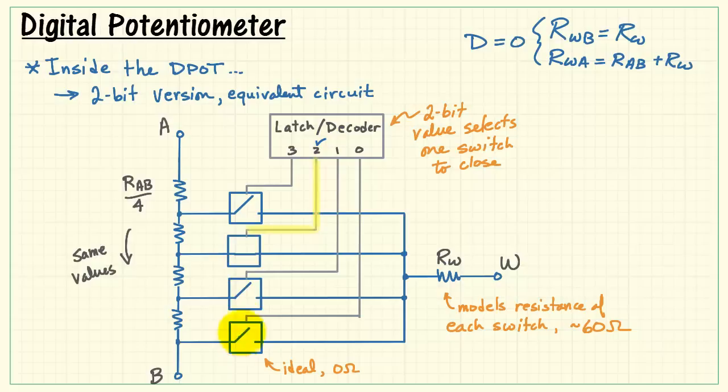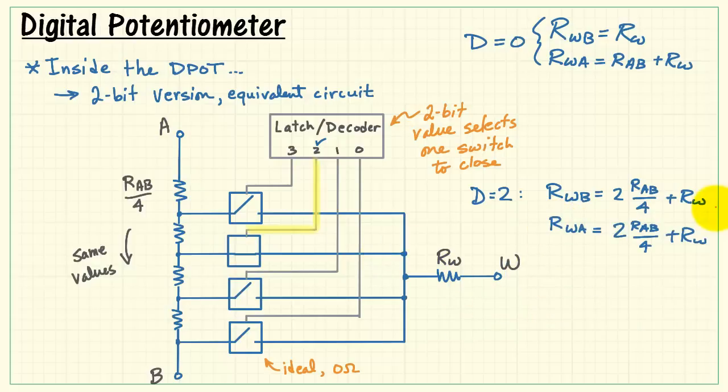Now suppose the digital value was two. That would close this switch and open the one down here. Now B goes through two resistors on its way out to W. That would look like two times RAB divided by four. Going from A to W, we actually get the same result. Two of those one quarter RAB resistors plus Rw. Notice as we go from zero to two that the RWB value went up. However, the other one, we see it decreasing. It started as a larger value and now it's half that value.